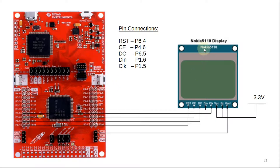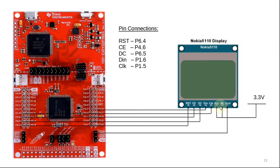This is the connection diagram showing how the Nokia 5110 display is connected to the MSP432. It is an 8-pin LCD. The first pin is connected to P6.4, which is the reset pin. The second pin is the chip enable pin, connected to P4.6. The DC pin is connected to P6.5, the data-in pin to P1.6, and the clock pin to P1.5. VCC should be connected to 3.3V, and the backlight should also be connected to 3.3V — you can also connect the backlight to a PWM channel to change brightness. Ground should be connected to ground.